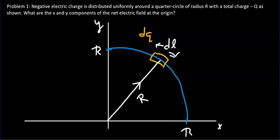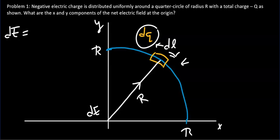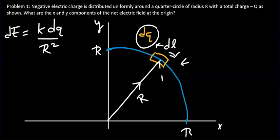The electric field that this segment creates at the origin is dE. Its magnitude is dE = k·dq/r², treating dq as a point charge, where k is 9×10⁹. Let's assume the x-coordinate of this segment is x, the y-coordinate is y, and this segment makes an angle alpha with respect to the x-axis.